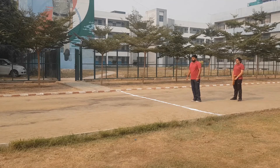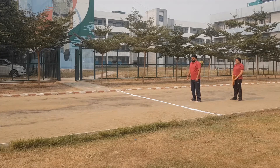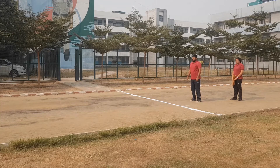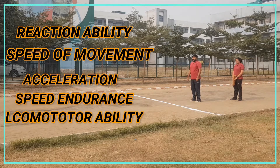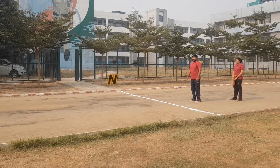Speed basically differs from individual to individual. It depends on fast twitch muscle fibers and slow twitch muscle fibers. A person with more fast twitch muscle fibers will have more speed, while slow twitch muscle fibers contribute to better endurance. Speed can be improved to an extent, but a drastic change is not possible. Speed is further divided into five types: reaction speed, speed of movement, acceleration speed, speed endurance, and locomotor ability.